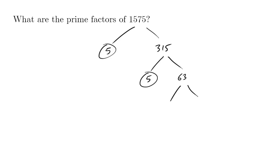And we have 63. Hopefully, we memorized that 9 times 7 is 63, and the 9 can be broken down to 3 times 3, which are also prime numbers.